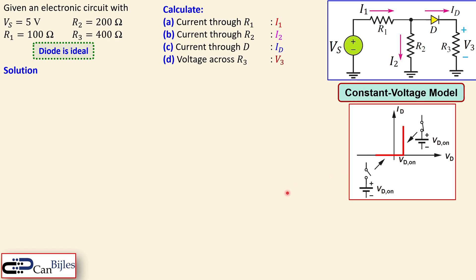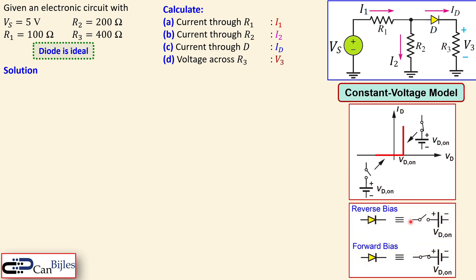The model has a VD_on which designates the on-voltage for the diode. Before VD_on the diode is off — considered an open circuit — which is called reverse bias. When VD_on is reached, the diode conducts with a constant voltage of approximately 0.7V (ranging from 0.5 to 0.8V depending on current). This forward bias condition is represented by a closed switch with a 0.7V drop.